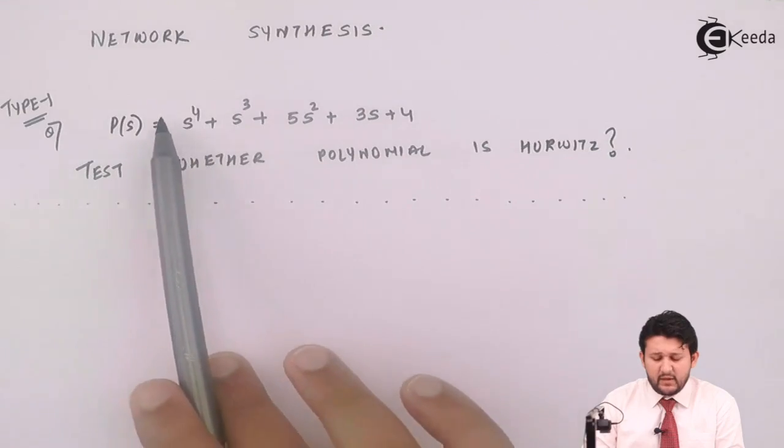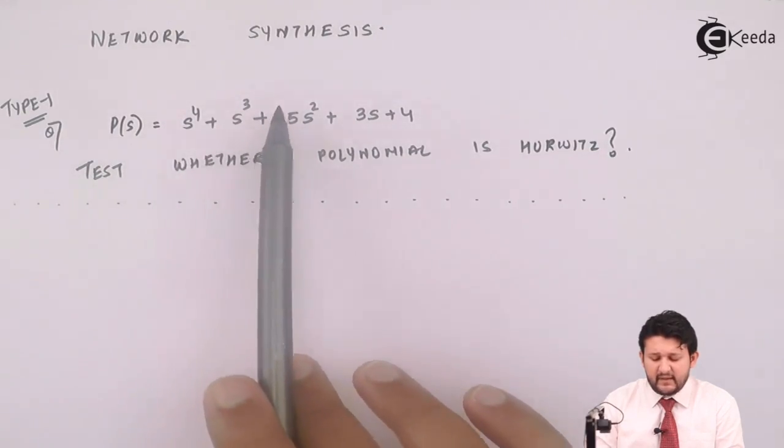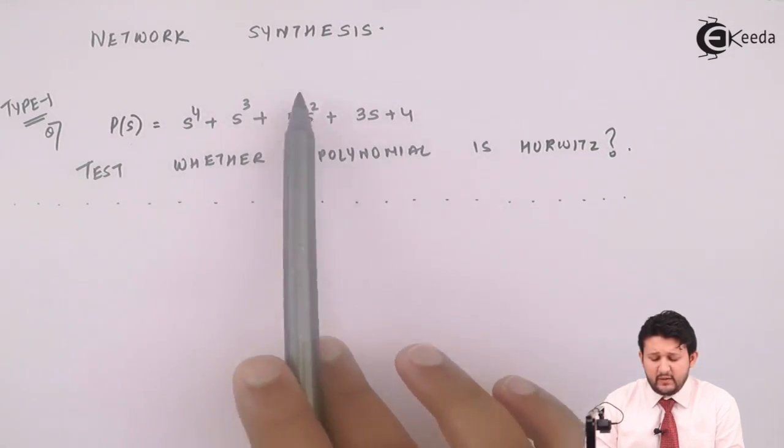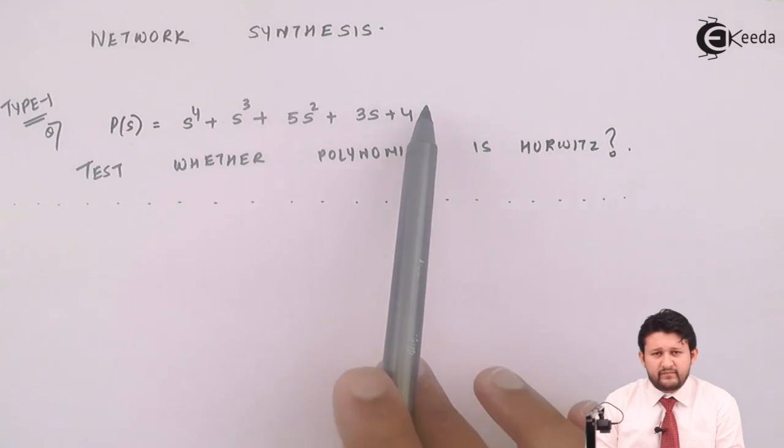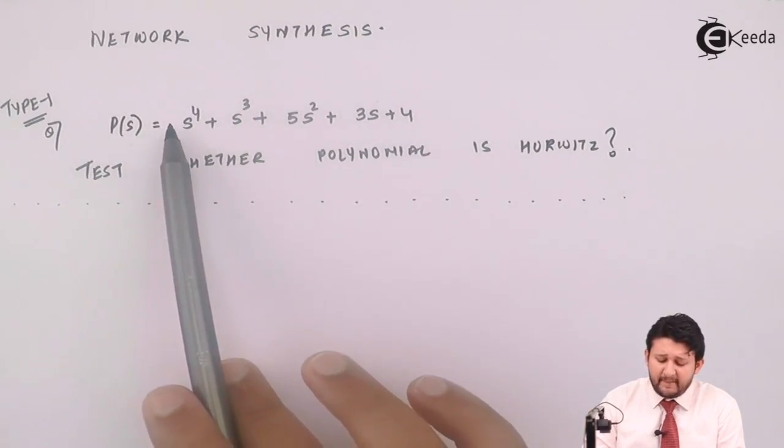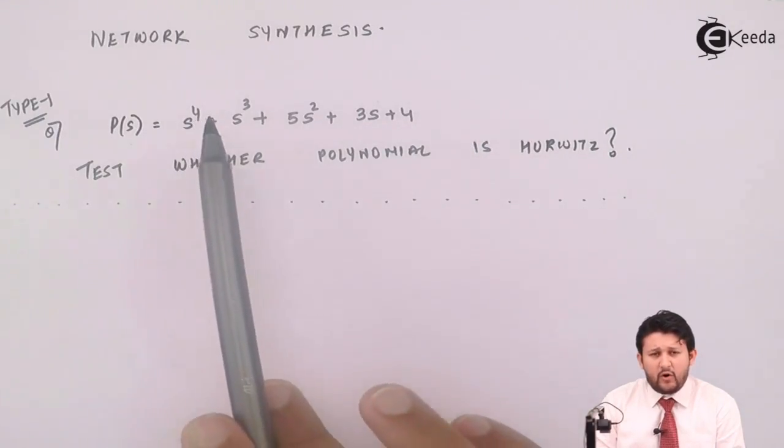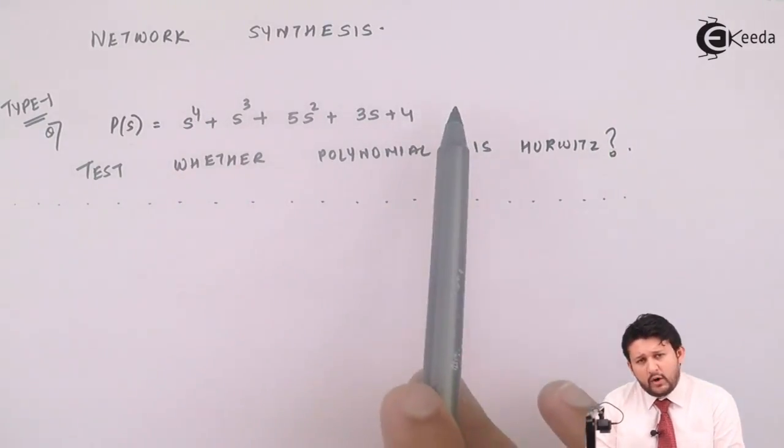Step number three: there should not be any missing term in the powers. For example, four, three, two is not there, one, zero - it should not be like that. Step number four: either your powers can be all even or all odd.